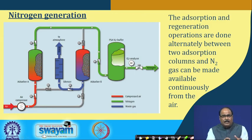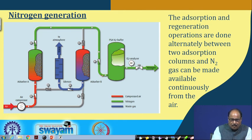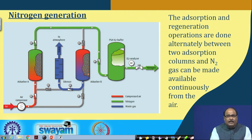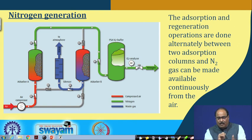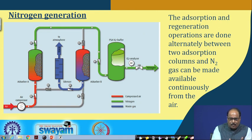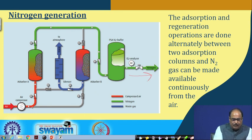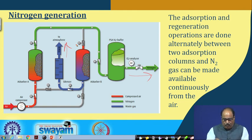As you can see in this figure of the nitrogen generator, the nitrogen gas (shown in green) is produced as compressed air (shown in red) enters through two adsorbers. The adsorption and regeneration operations are done alternatively between the two adsorption columns so that nitrogen gas is made available continuously from the air, while waste gases are allowed to escape to the atmosphere.